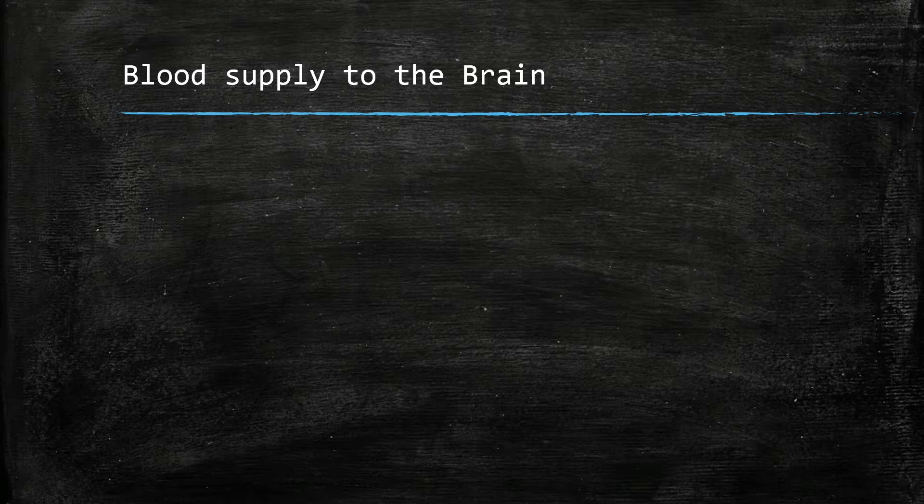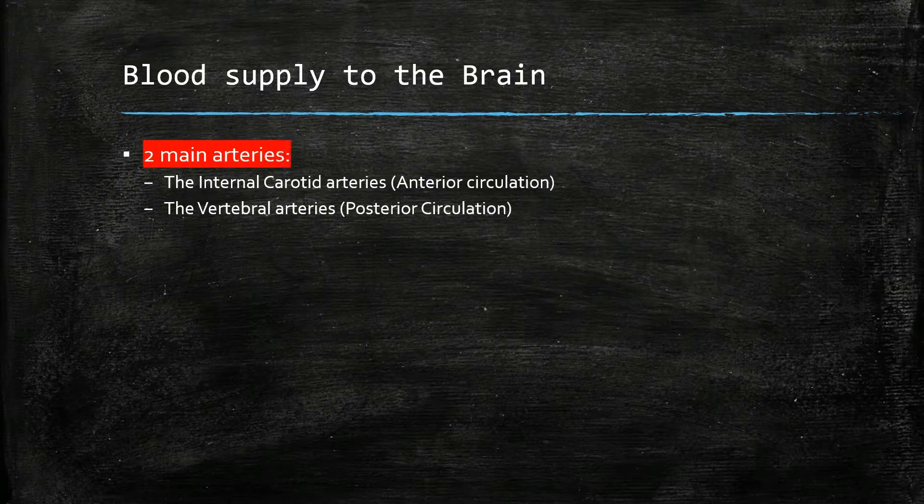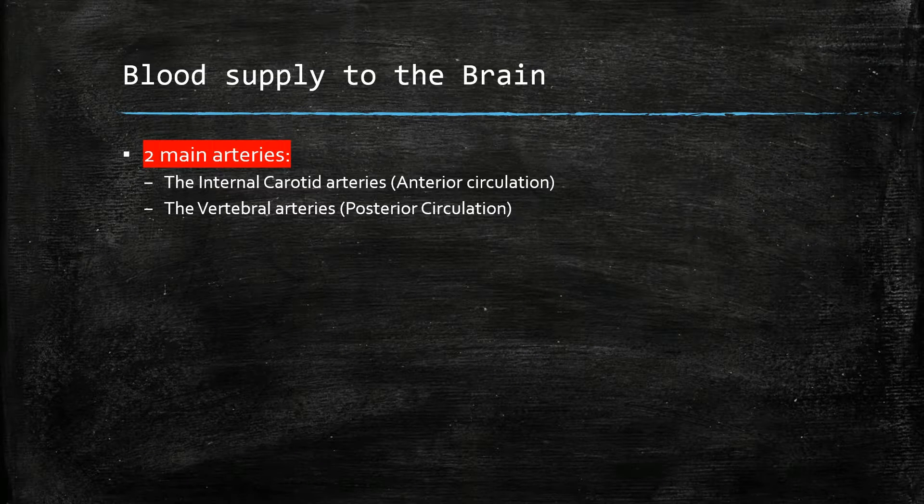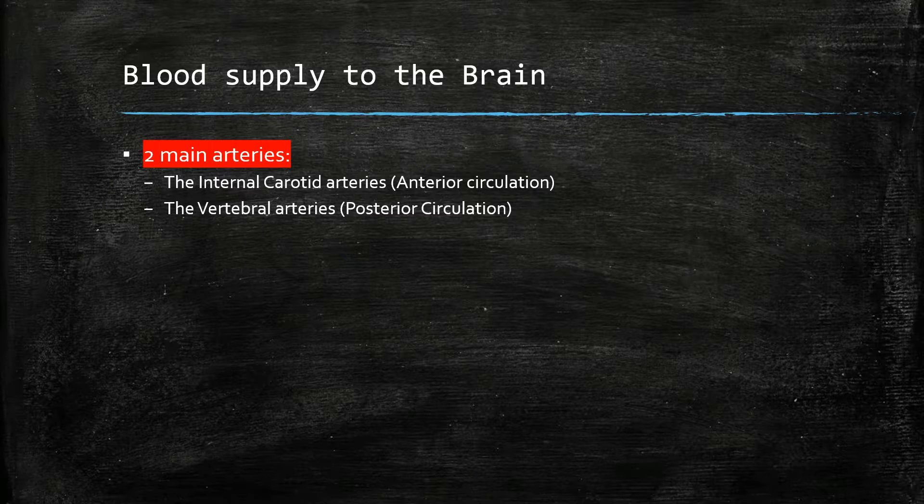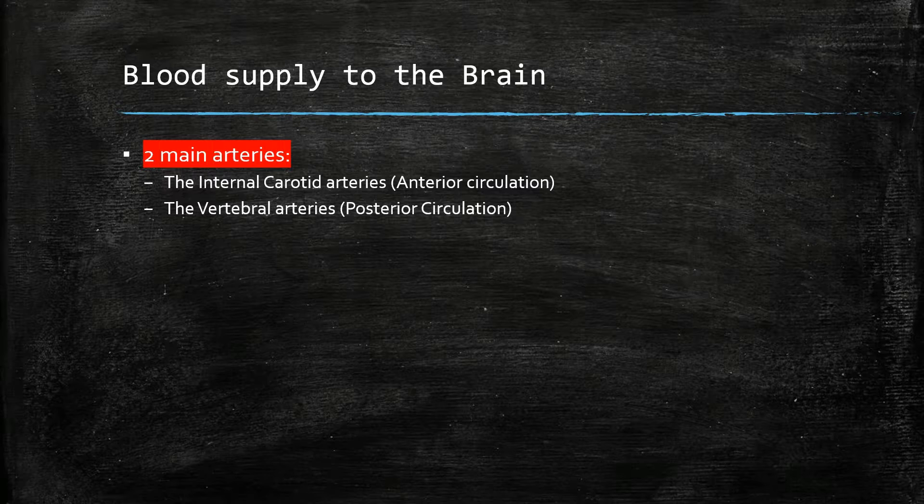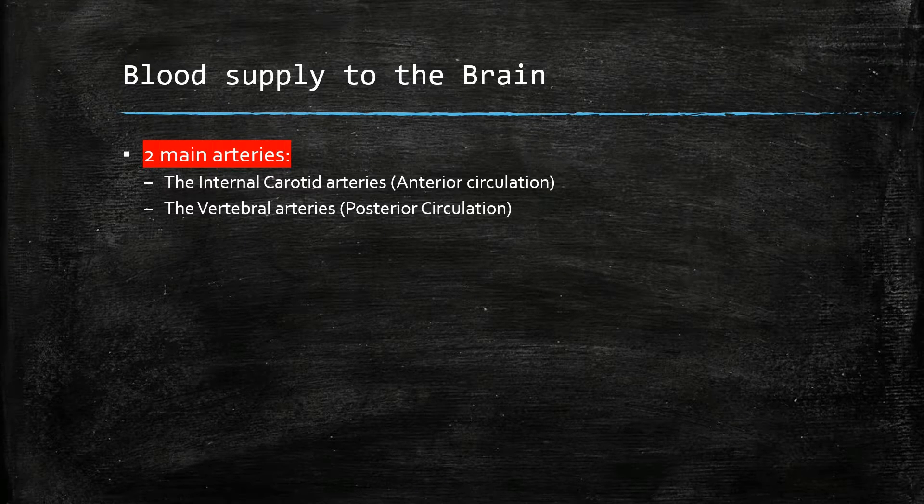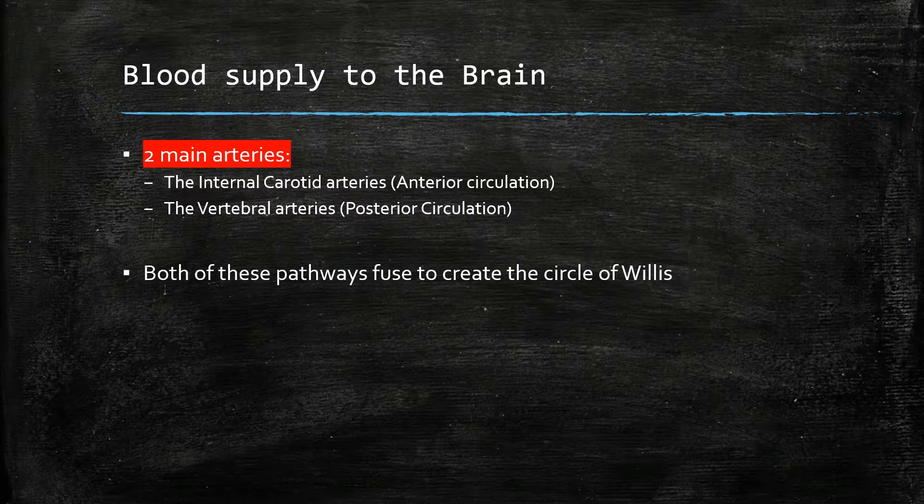The blood supply to the brain is through two main arteries: the internal carotid arteries, which run the anterior circulation to the brain, and the vertebral arteries, which run the posterior circulation to the brain and medulla. Both of these pathways fuse to create a network which supplies the brain called the circle of Willis.